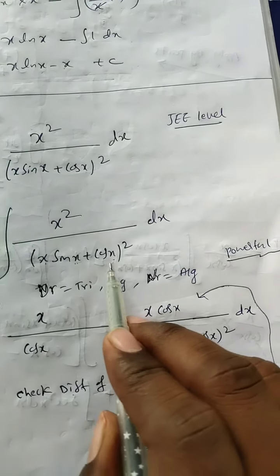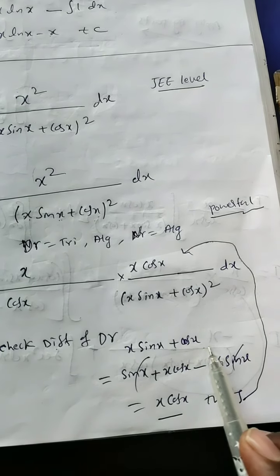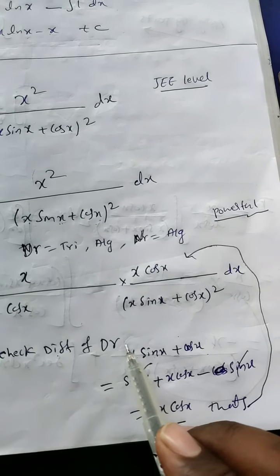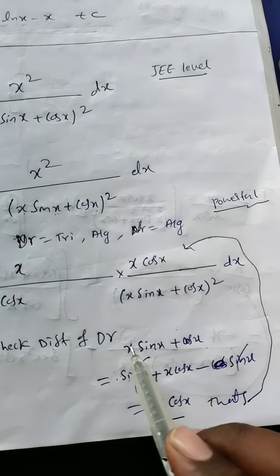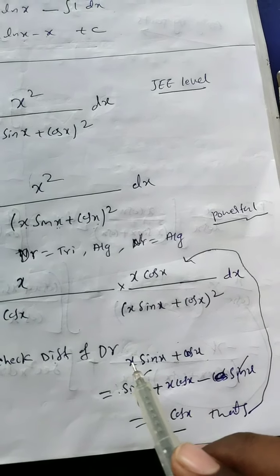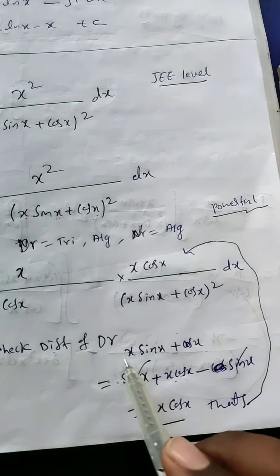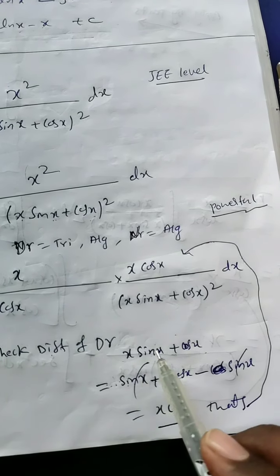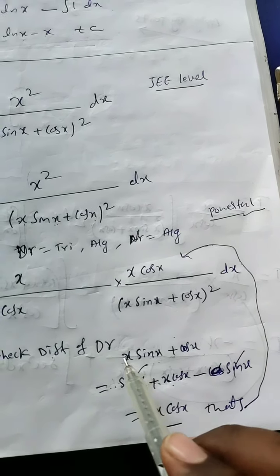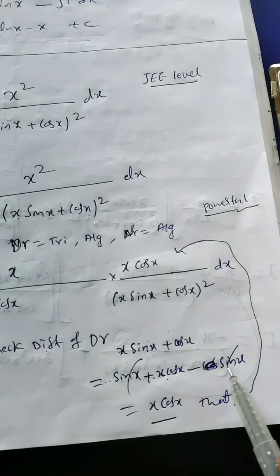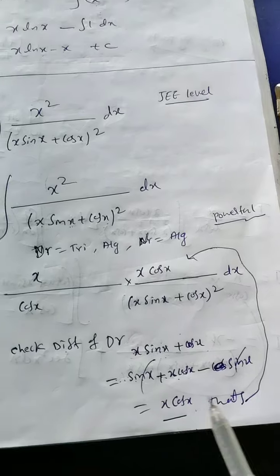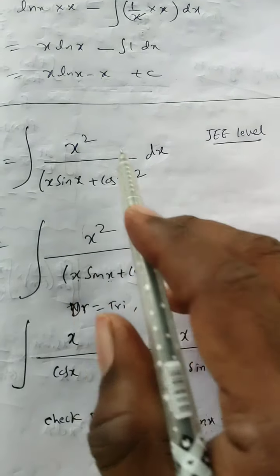See the denominator — find the differentiation of (x sin x + cos x). Applying the product rule: differentiation of x sin x is (1)(sin x) + (x)(cos x), that is sin x + x cos x. Then differentiation of cos x is minus sin x. So minus sin x and plus sin x cancel, and the differentiation of the whole denominator is x cos x.